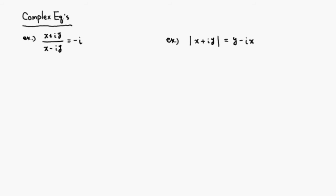Let's look at a couple of complex equations. The first one: (x + iy) / (x - iy) = -i. So let's solve this equation for x and y. The first thing I would do is, I don't like a fraction, so I'm going to multiply both sides by (x - iy).